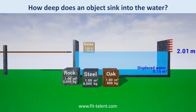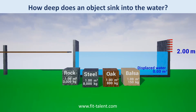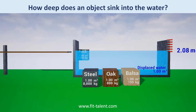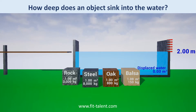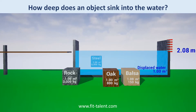A submerged object displaces exactly its own volume because it is entirely underwater. Look — the rock cube displaces one full cubic meter, its full volume. The steel cube also displaces one full cubic meter, its full volume.